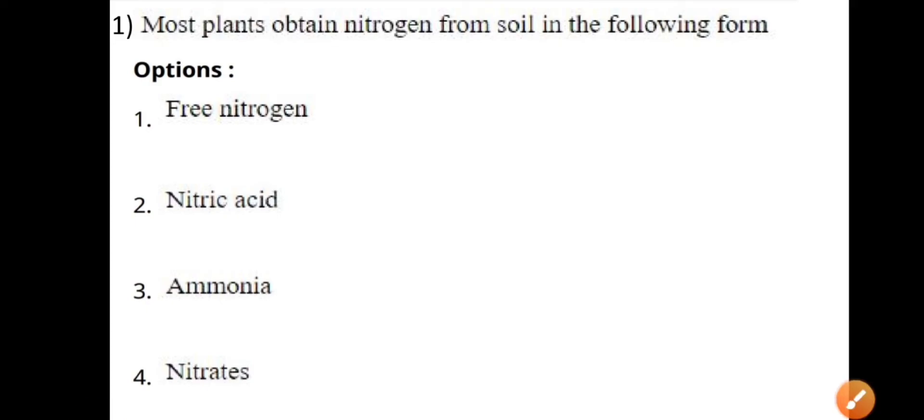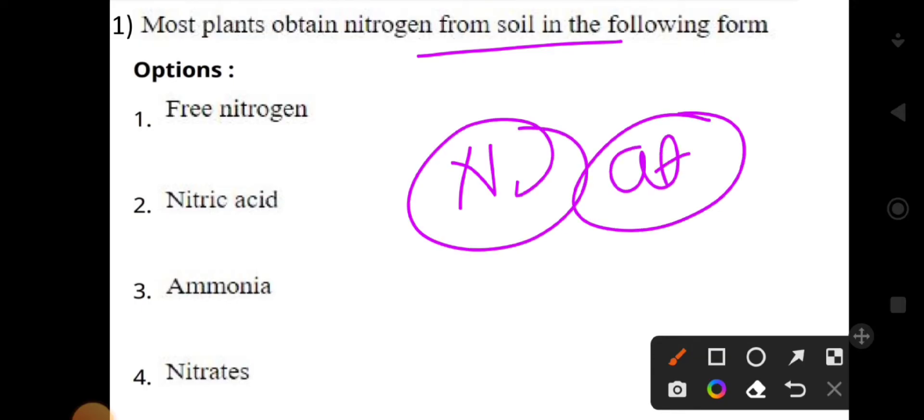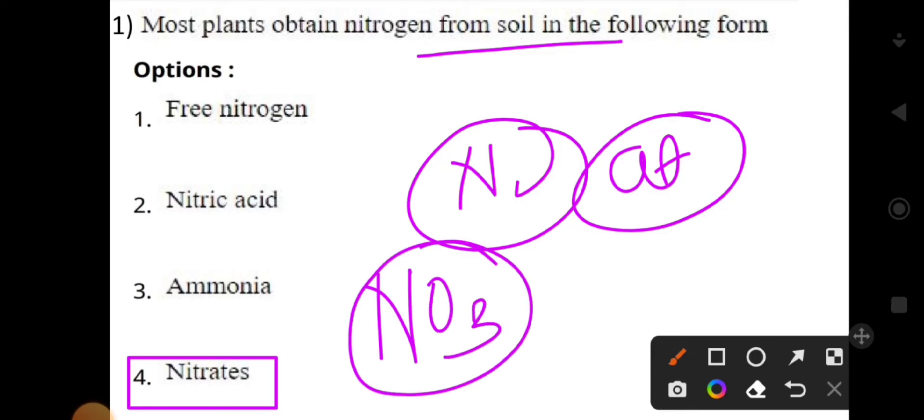Let's go to the first question. Most plants obtain nitrogen from the soil in the following form. Mainly nitrogen is present in the atmosphere as a gas, but plants absorb it in the form of nitrates. The chemical formula is NO3. The correct answer is nitrates.